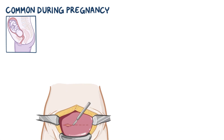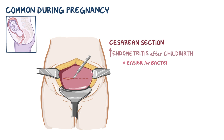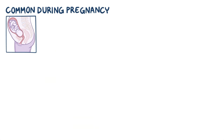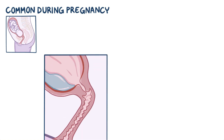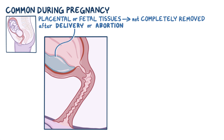In addition, people who give birth by cesarean section are even more likely to have endometritis after childbirth. This is because cesarean section makes it easier for the bacteria in the lower genital tract to reach the endometrium, and even bacteria from outside the body can make their way in. Endometritis can also occur when placental or fetal tissues are not completely removed from the uterus after delivery or abortion, as these tissues provide a good environment for bacteria to grow and cause an infection in the uterus.